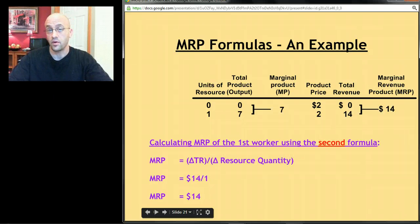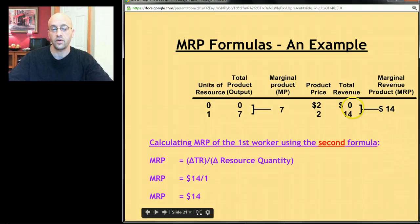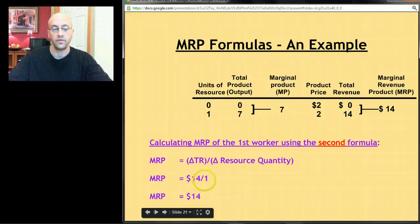Using the second formula gives the same result. Change in total revenue: went from $0 to $14, so the change is $14. Change in resource quantity: went from zero to one worker, so the change is one. $14 ÷ 1 = $14. Both formulas give the same answer.